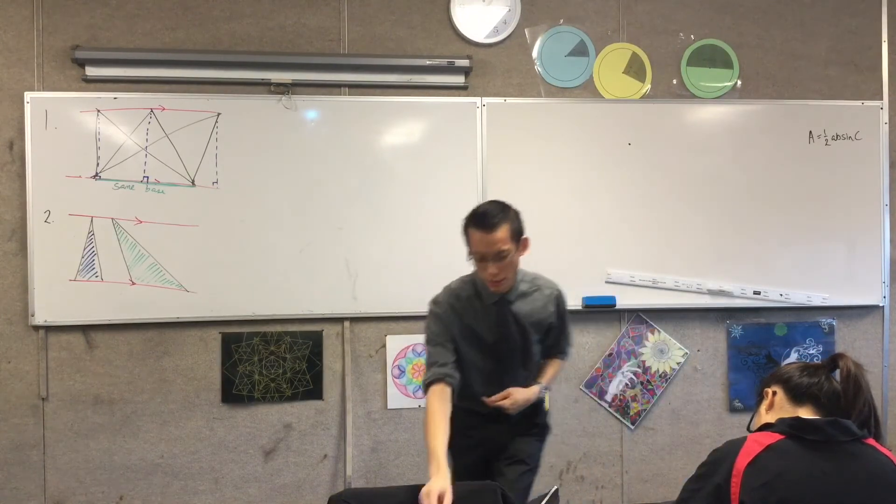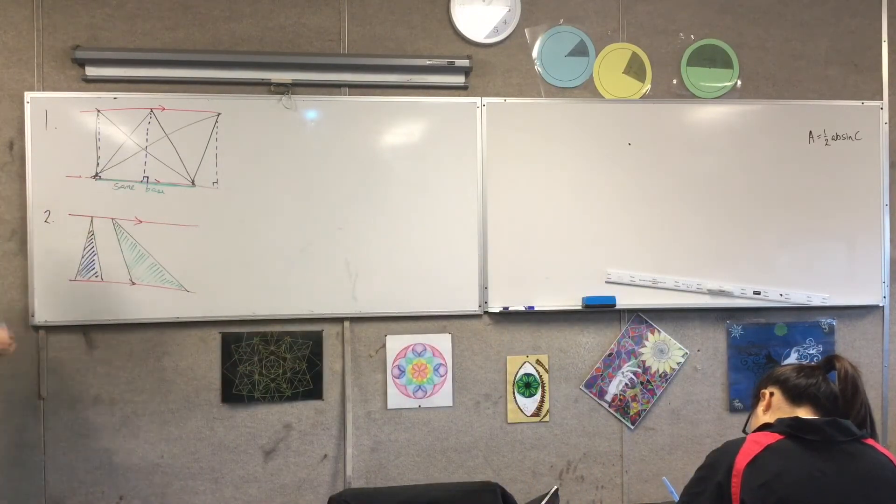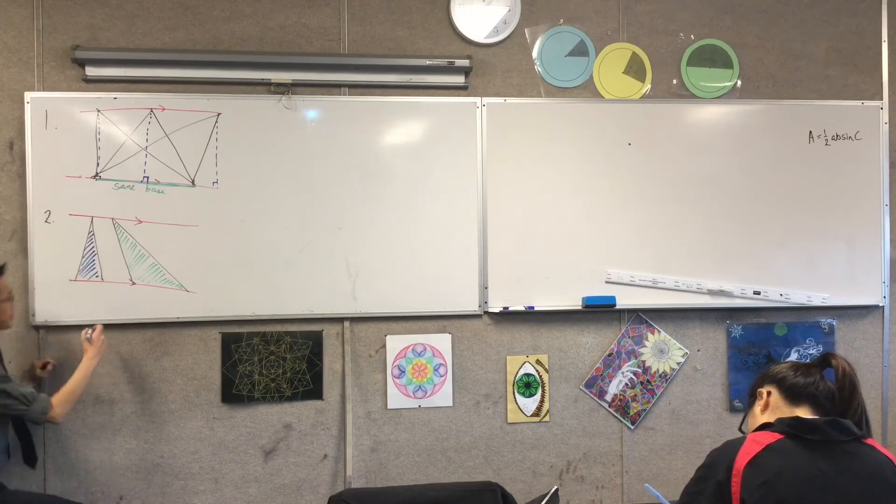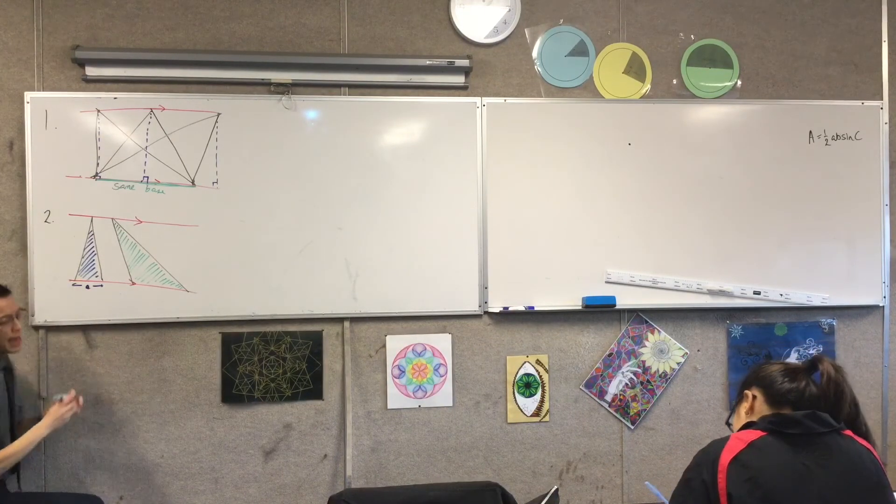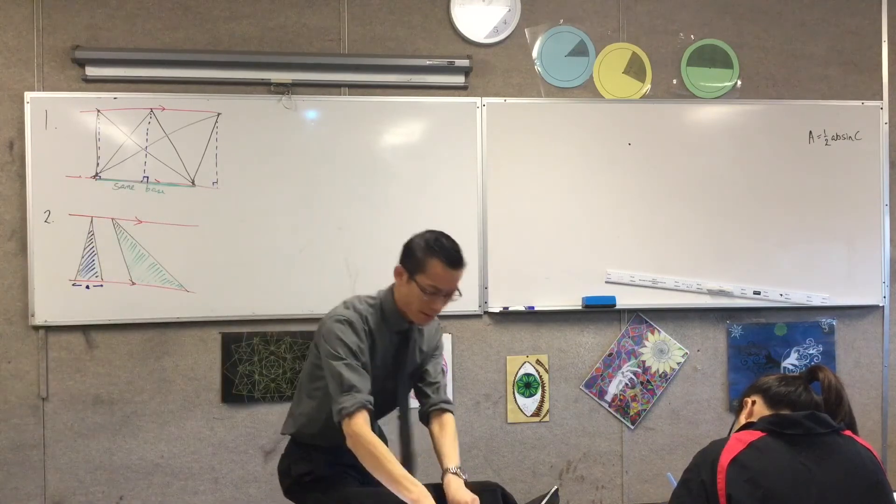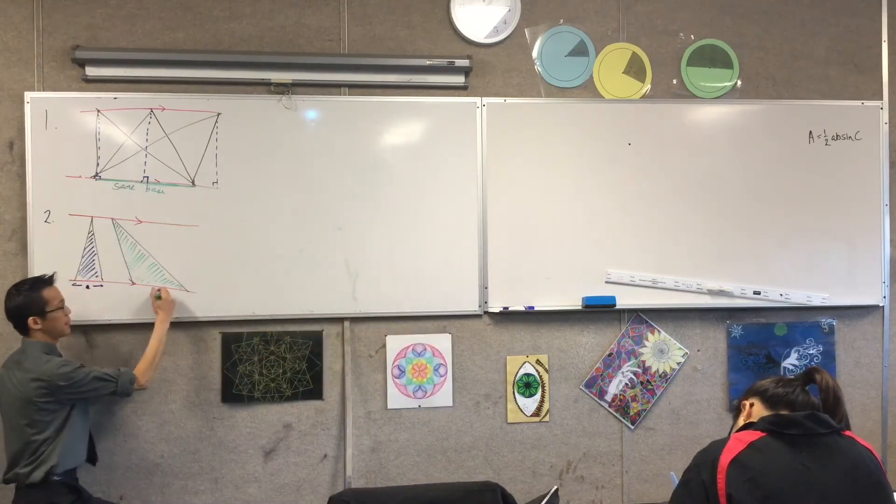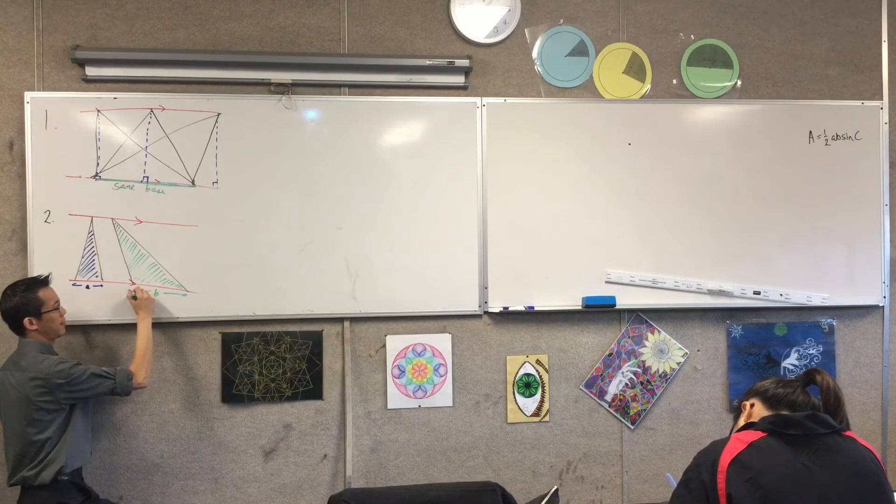So all that's different between these two is their bases. Now if I just like name these bases, let's call this length over here A, and we'll call the base of the other one, very originally, math edition's always known for that kind of thing, B. Okay.